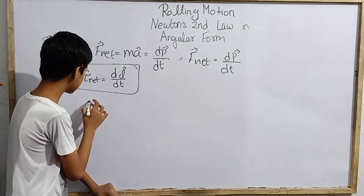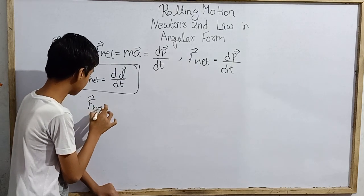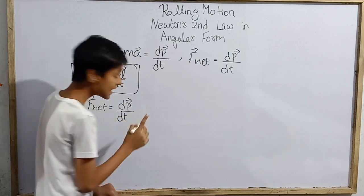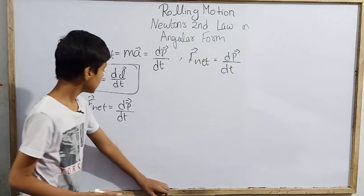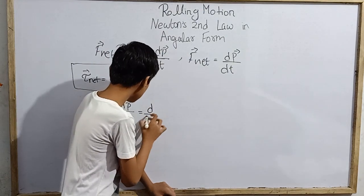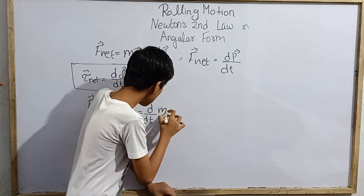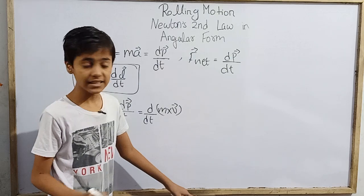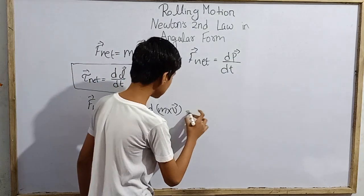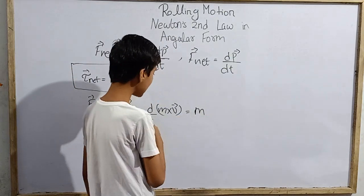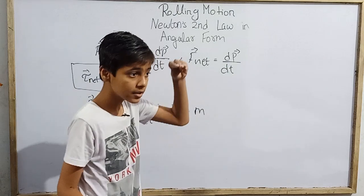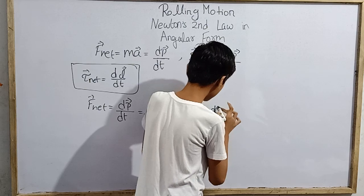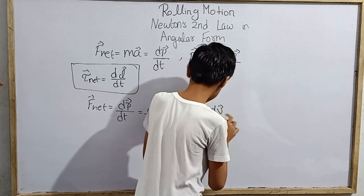So what do we do? Let's start. We write that F_net vector equals d of p vector upon dt — this is a known truth. Now d(p)/dt equals d(mv)/dt, which is mass times velocity vector. Since mass is constant at low speeds, m comes out and we get d(v)/dt.